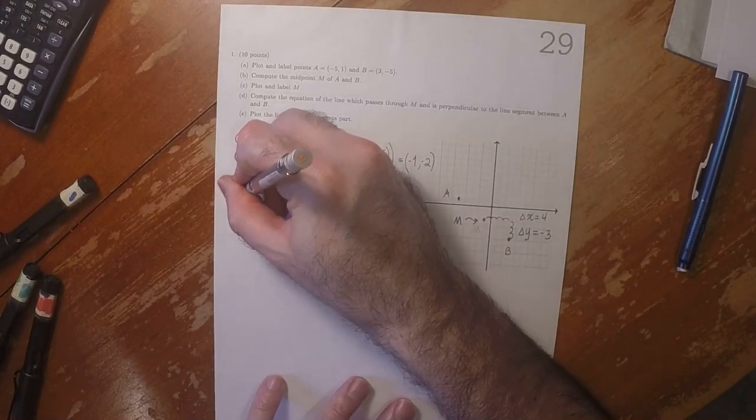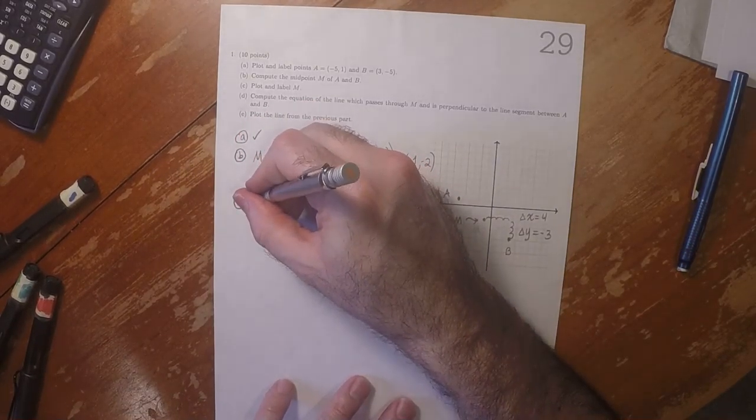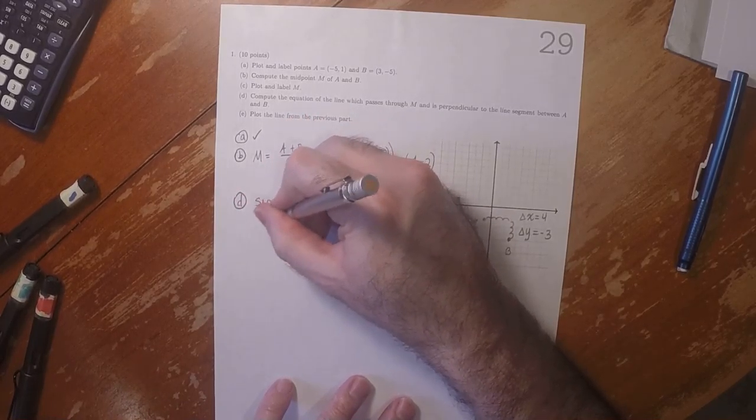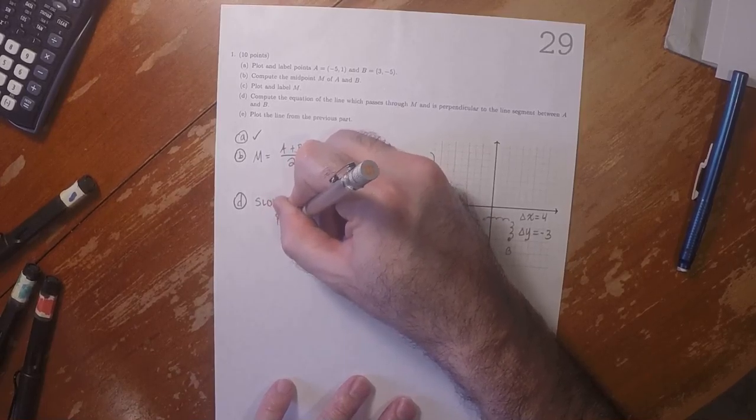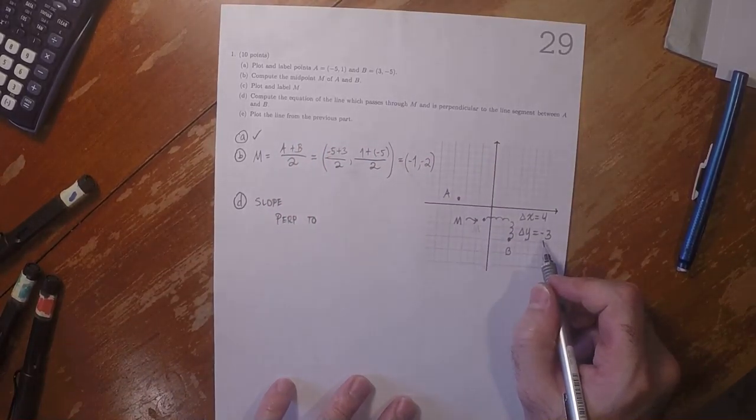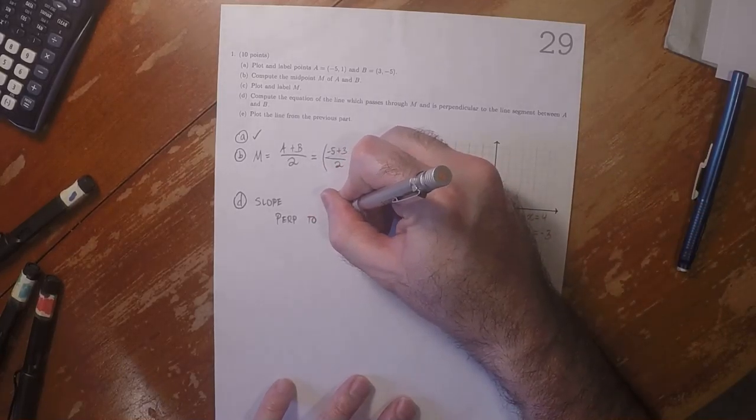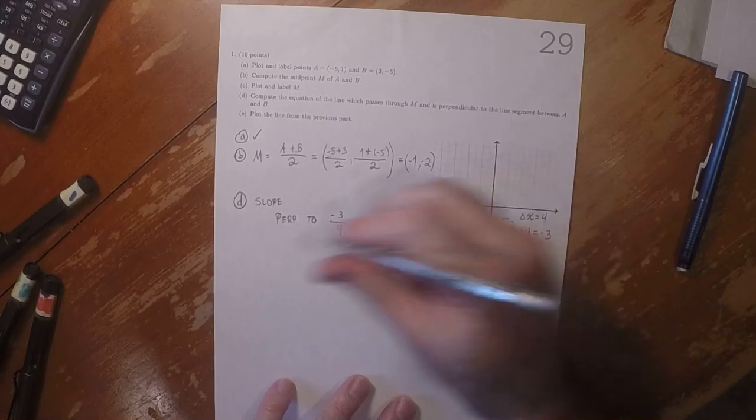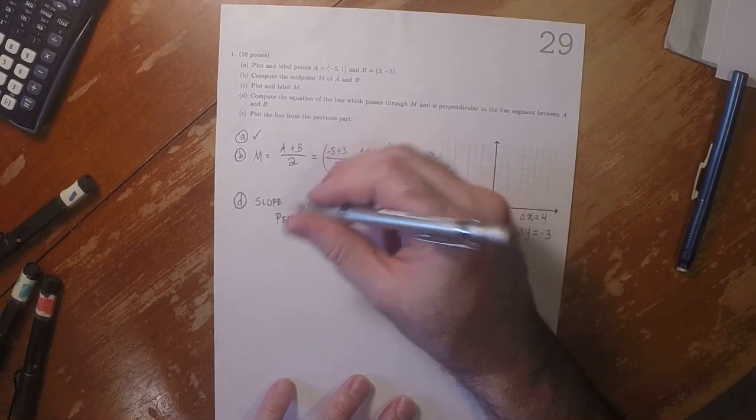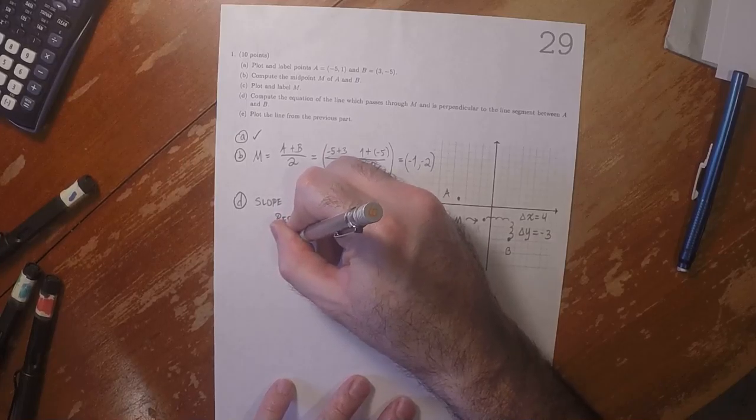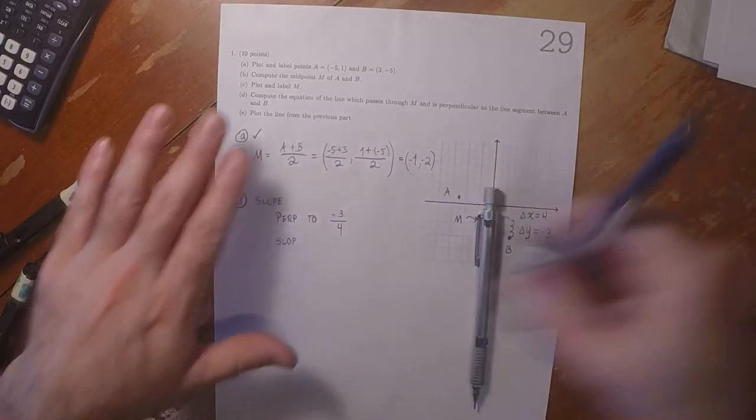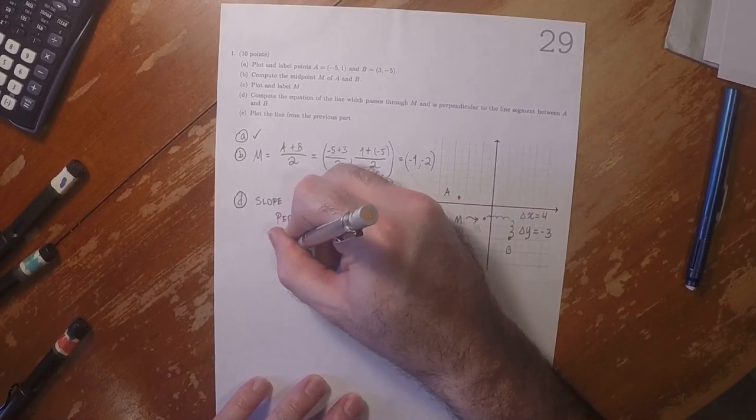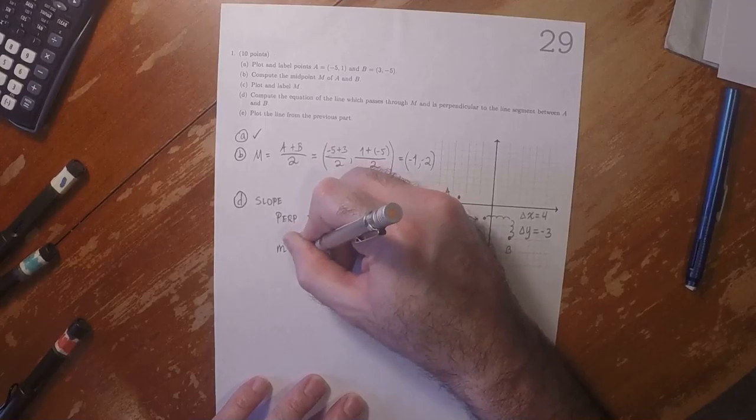So as for D, the slope that we're looking for is perpendicular to negative 3 over 4. So that means that the true slope is M equal to 4 thirds.